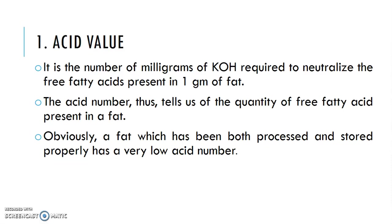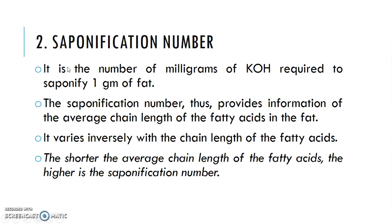A low acid number indicates good quality fat. The saponification number is defined as the number of milligrams of KOH required to saponify one gram of fat. The saponification number tells us about the average chain length of the fatty acids in the fat. It varies inversely with chain length — the shorter the average chain length of the fatty acid, the higher the saponification number.